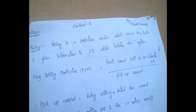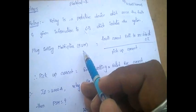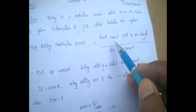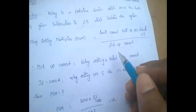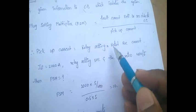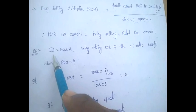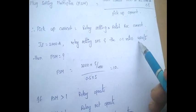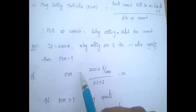In relays, a very important concept for problems is the Plug Setting Multiplier (PSM). PSM equals fault current referred to the secondary side of the current transformer (CT), divided by pickup current. Pickup current equals relay setting multiplied by rated secondary current. For example, if fault current If = 2000 amps, relay setting is 50%, and CT ratio is 400/5 (primary 400A, secondary 5A).